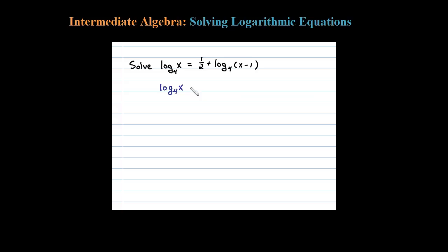base 4 of x, that's this one, minus log base 4 of x minus 1, and that's going to be equal to 1/2. So what I did there was subtract this term on both sides. Now I have both logs on the same side, so I can apply the property that says this is equivalent to log